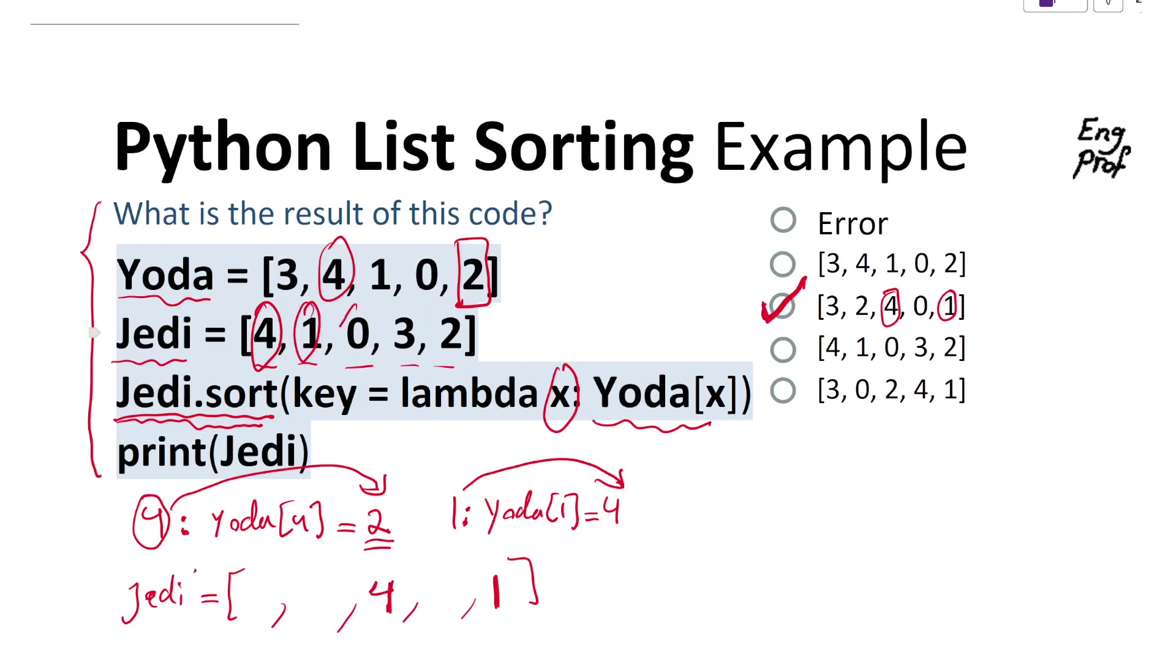But to complete, let's look at 0 in Jedi. 0 goes to Yoda[0], which is 3. So obviously it means 0 has to go to position 3.